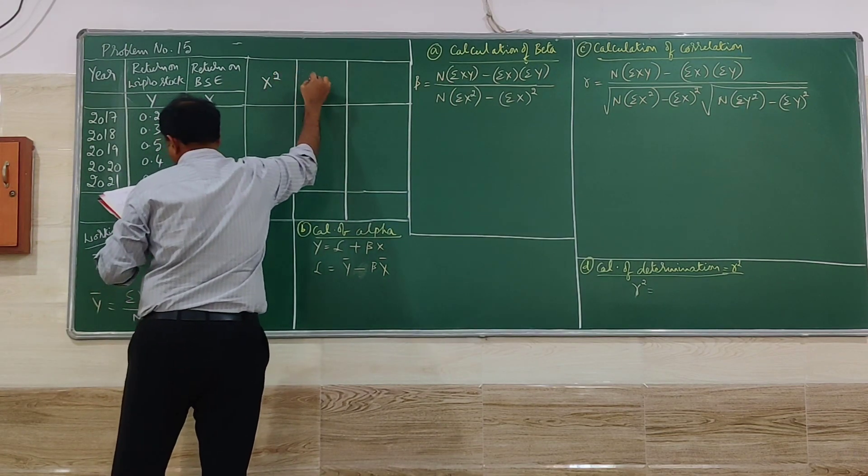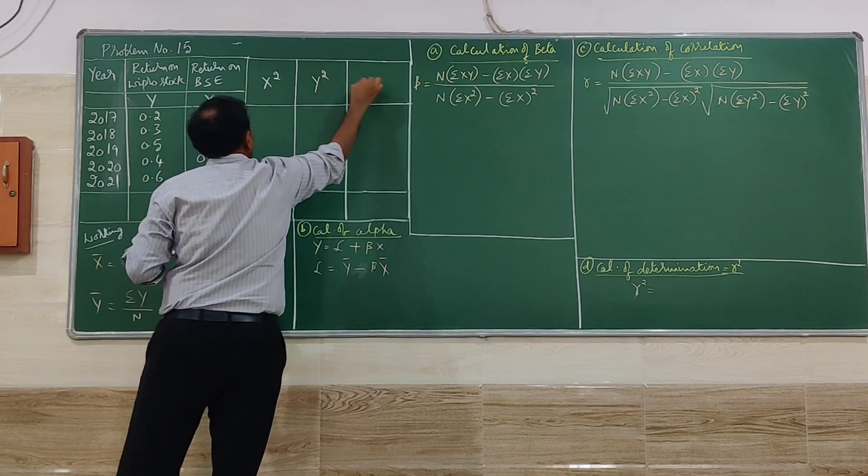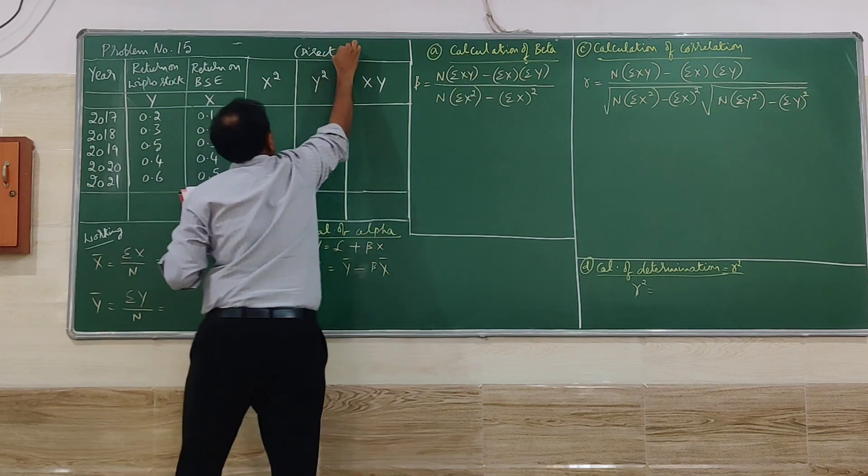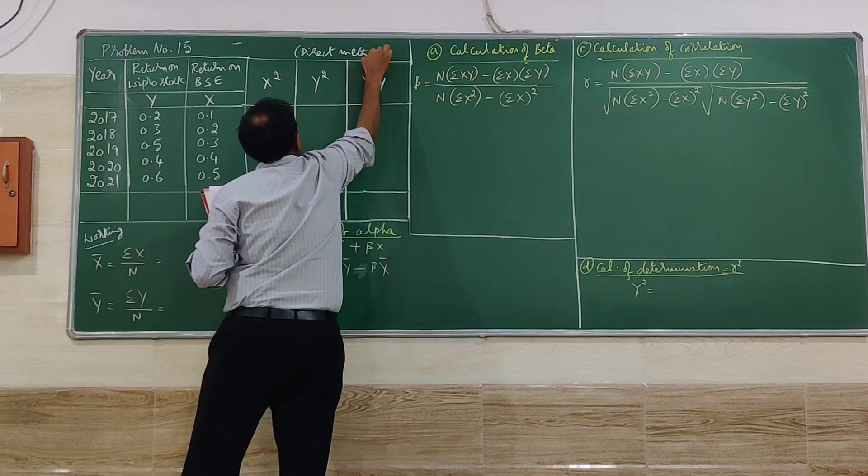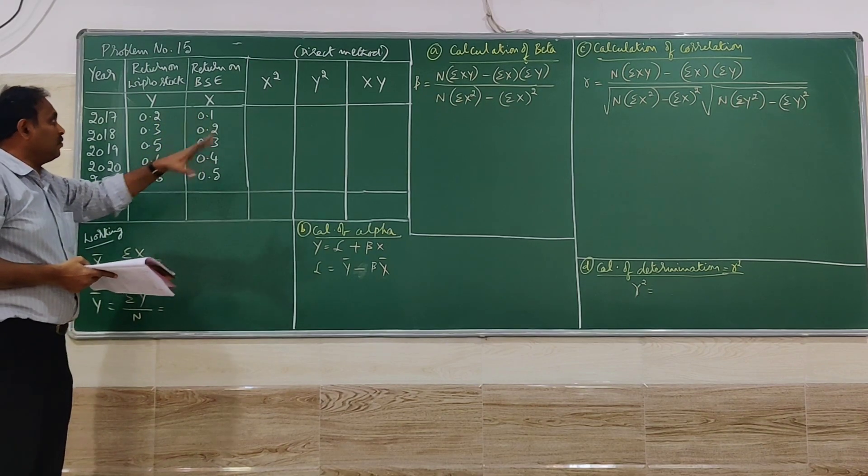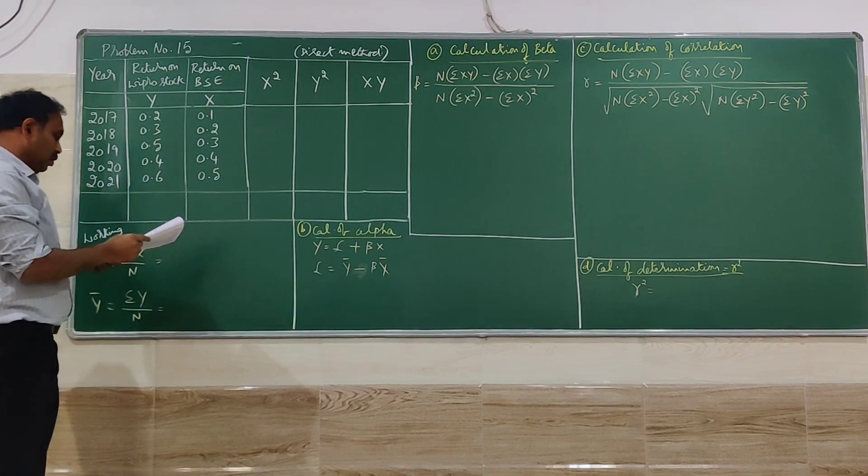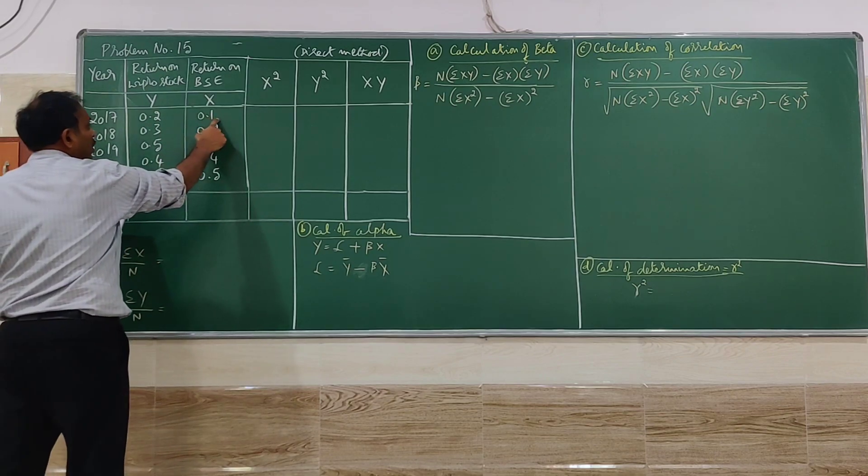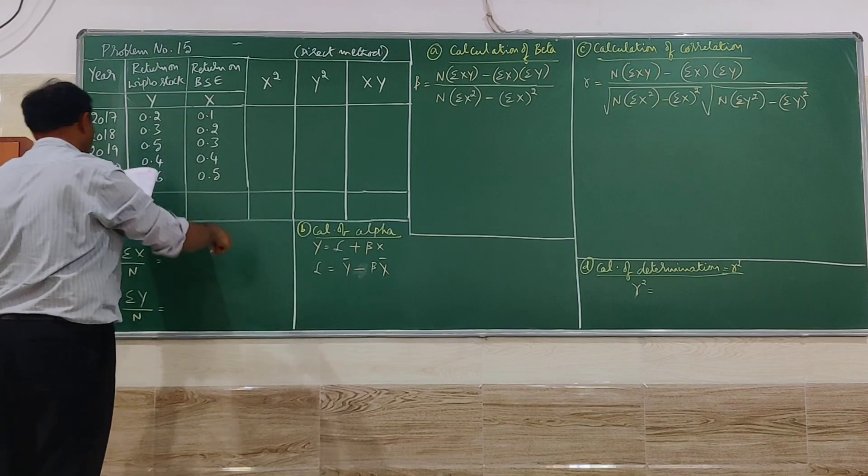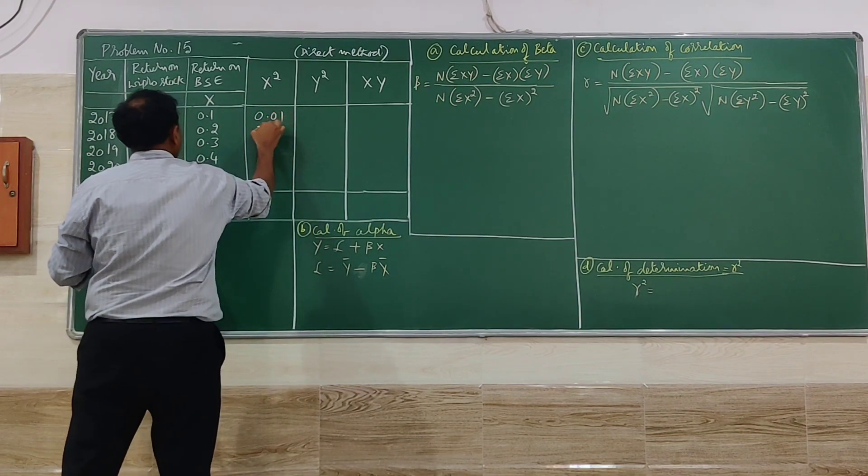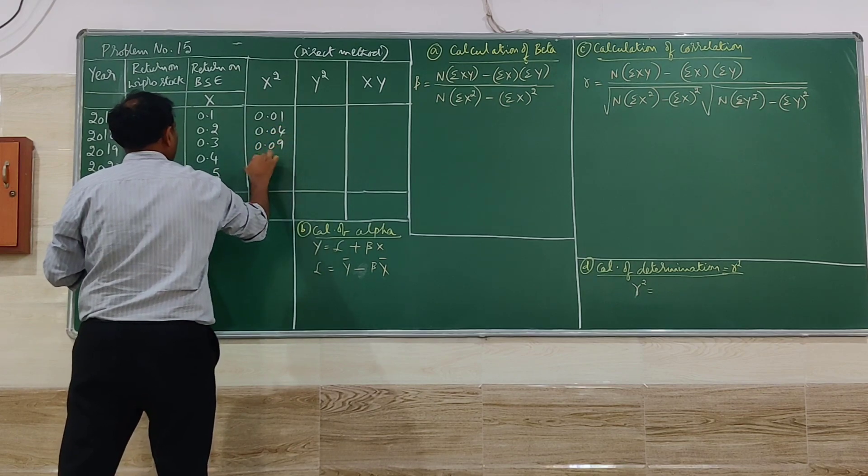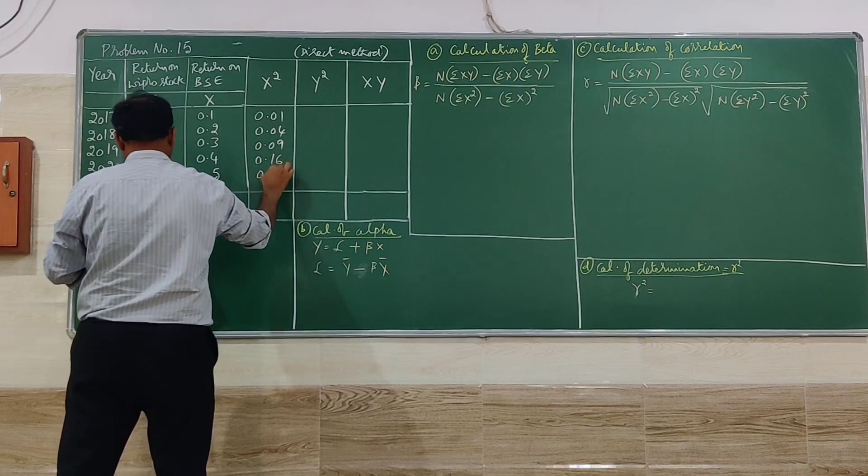First is X square. Then is Y square. Then X into Y. Remember we are doing a direct method. We can do different methods. I am doing a direct method, one of the easiest one. So we will go for X square first here. 0.1 into 0.1, 0.2 into 0.2 like that. We have to square the X values over here. 0.01, 0.04, 0.09, 0.16, 0.25.